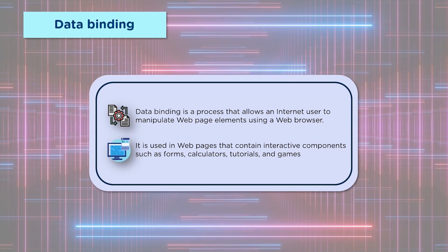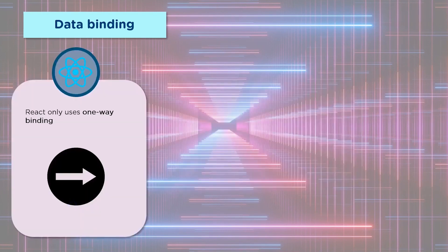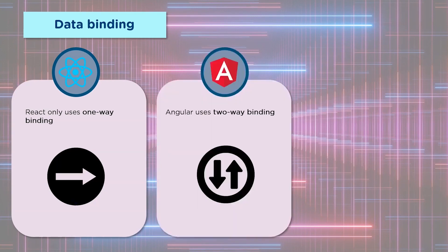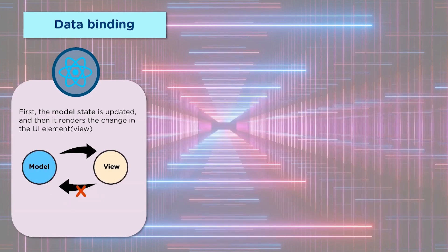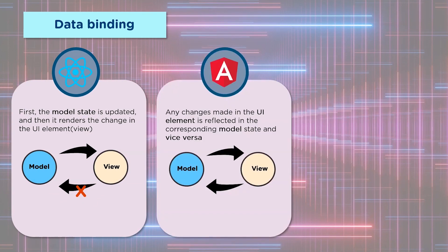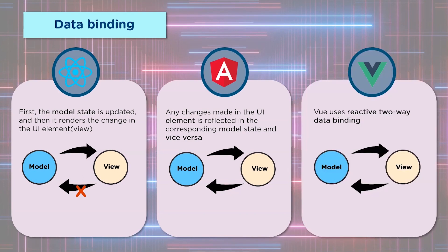Data binding is used in interactive components such as calculators, tutorials, games, etc. React supports one-way data binding, meaning you can take the data from the View and push it to the model or vice versa. Angular uses two-way data binding, and Vue also uses a similar two-way data binding. In React, every time the model state updates, the View changes accordingly — however, the reverse is not true. In Angular, any changes made to the View are immediately reflected in the model. Vue follows the same principle.